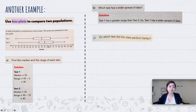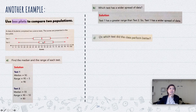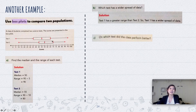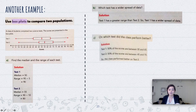For part C, on which test did the class perform better? The median of Test 2 is higher than Test 1. Looking at the boxes: 50% of students on Test 1 scored between 35 and 65, while 50% on Test 2 scored between 45 and 70. Generally, students did better on Test 2 than Test 1.